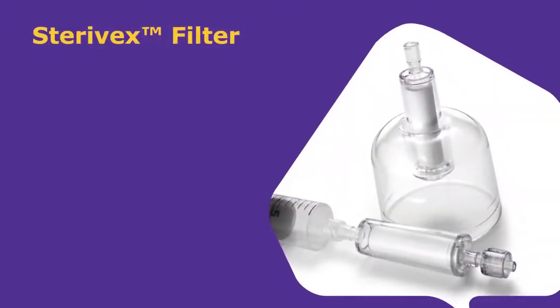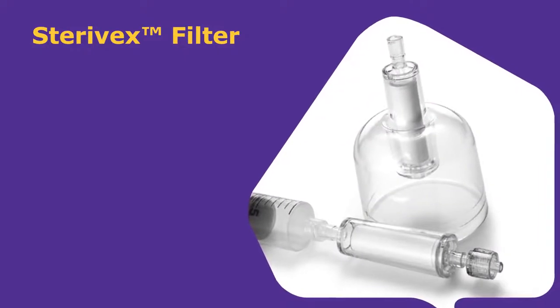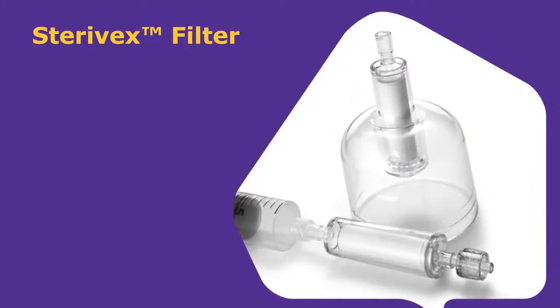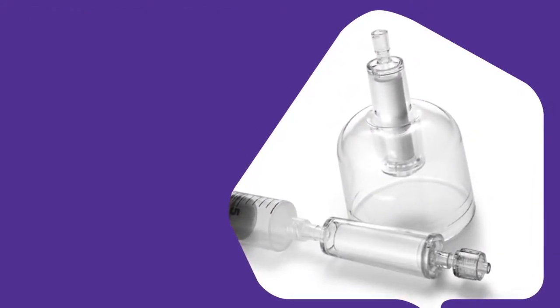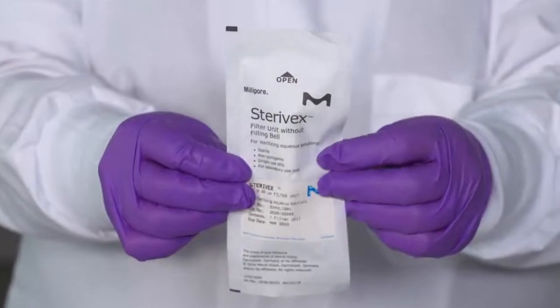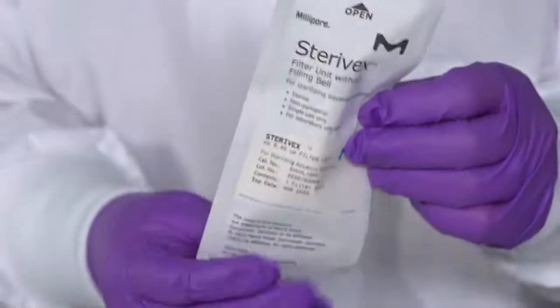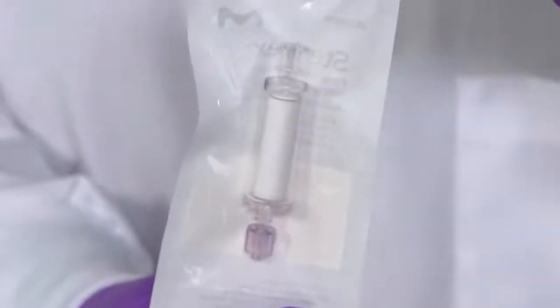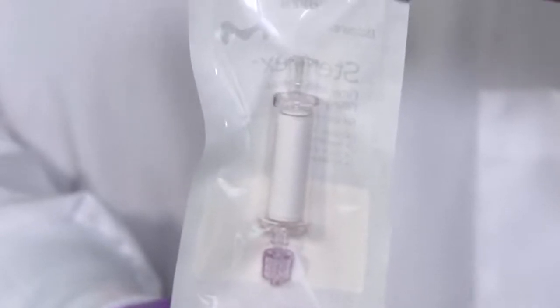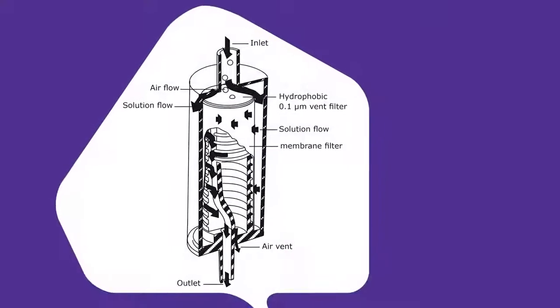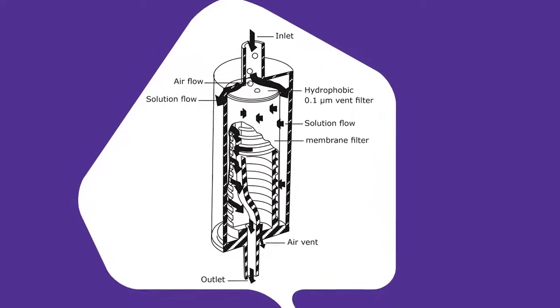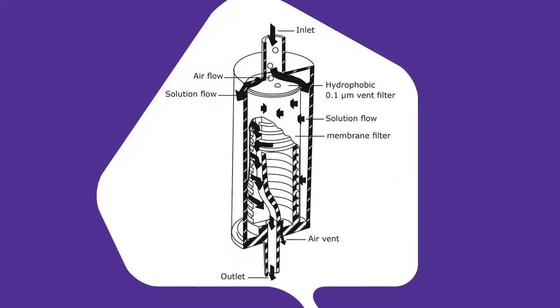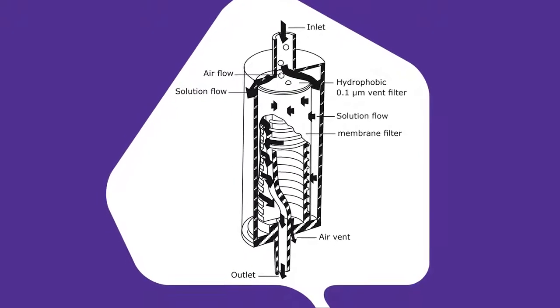Using a 0.2 micron sterilizing grade Sterivex GP, GV, or for clarification, use the 0.45 micron HV filter units for large volumes up to 1 liter. These compact design filter devices are single use and boast an impressive 10 square centimeter filter area that is wrapped around a center core. It also features a vent filter to prevent air locking.